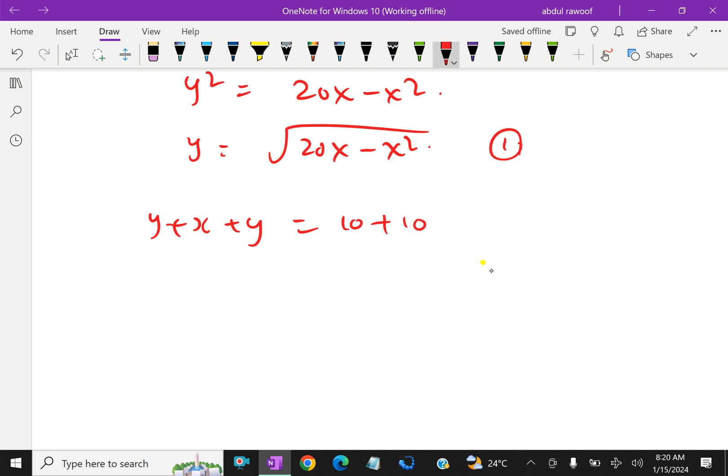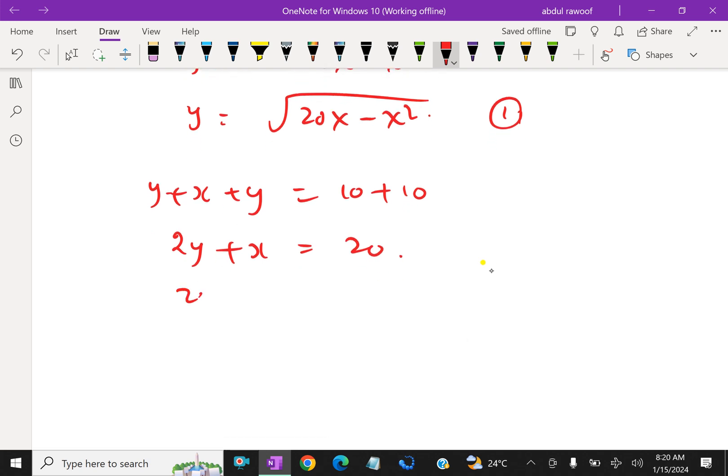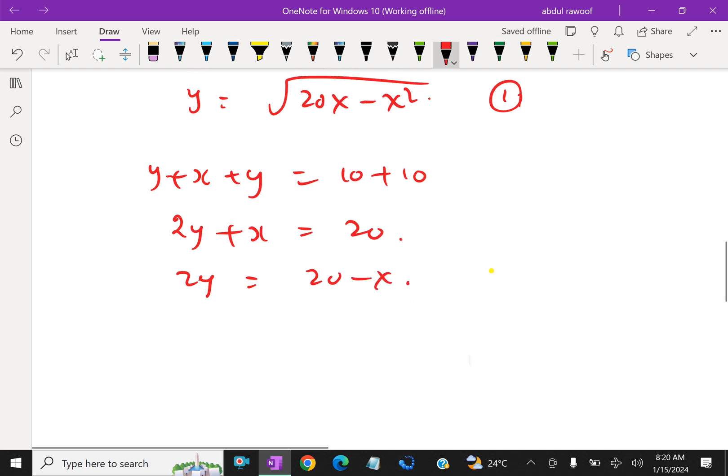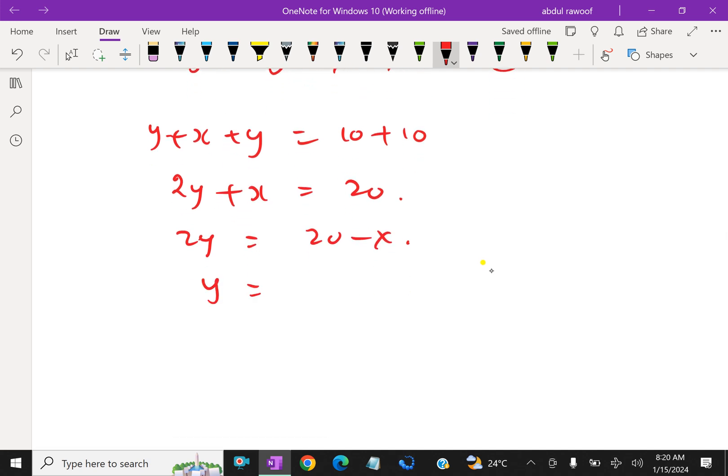So we have 2y plus x equals 20. From this, 2y equals 20 minus x. Dividing by 2 both sides, y equals 10 minus x by 2. So this is equation 2.